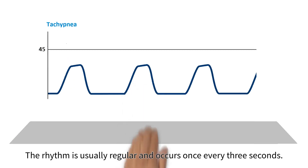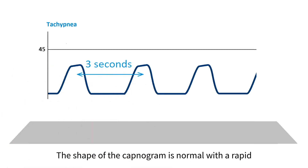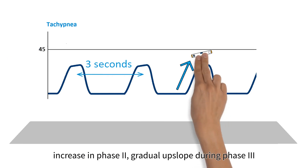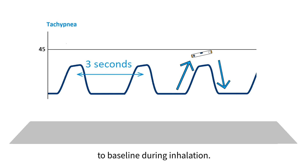The rhythm is usually regular and occurs once every 3 seconds. The shape of the capnogram is normal, with a rapid increase in phase 2, gradual upslope during phase 3, and abrupt descent during phase 0 back to baseline during inhalation.